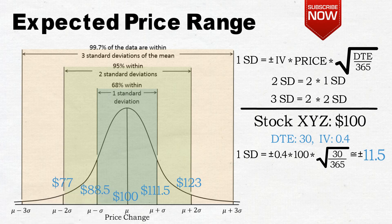A two standard deviation move would be up to $123 or down to $77.